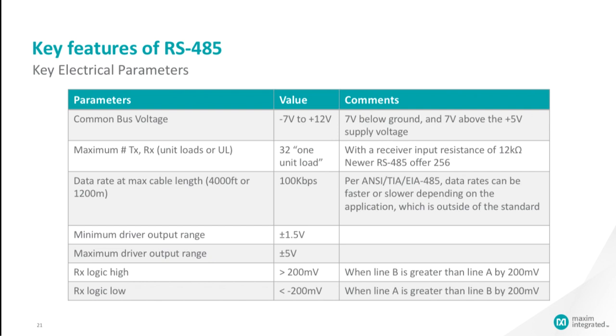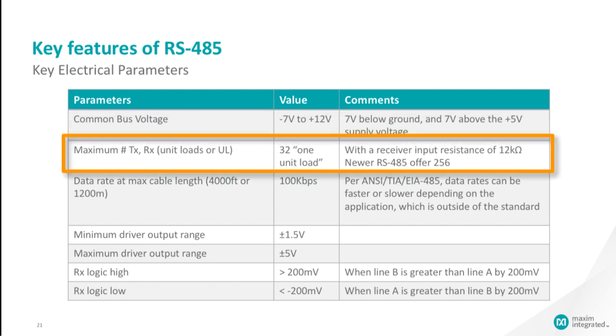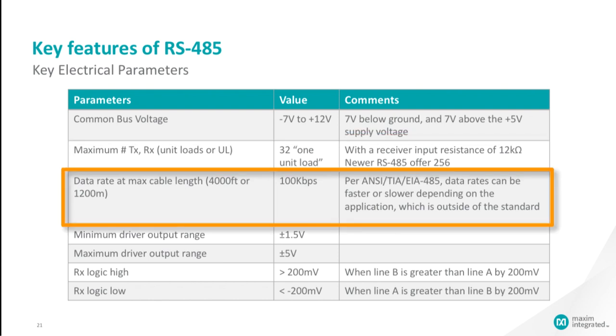The table in this slide highlights the key electrical parameters for the RS-485 standard. The common bus voltage for RS-485 is between minus 7 volts and plus 12 volts, which is 7 volts below ground or 0 volts, and 7 volts above plus 5 volts. This means that the RS-485 transceiver will still operate normally as long as the voltage remains in this voltage range. The maximum number of transceivers on one common bus was originally defined as 32 maximum, but it is common today to see RS-485 transceivers capable of 256 transceivers. Due to differential signaling, the data rate was defined to be 100 kilobits per second over 1200 meters or 4000 feet. For the standard, data rates can be faster or slower depending on the application.